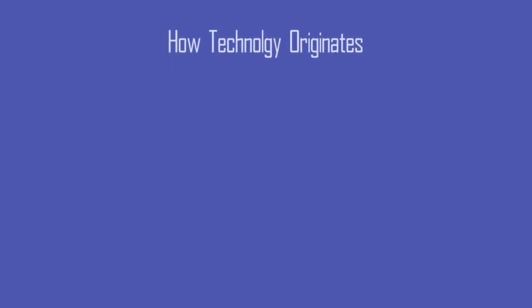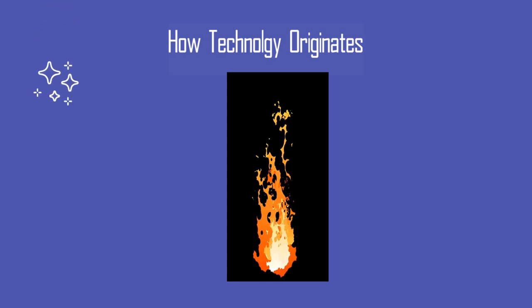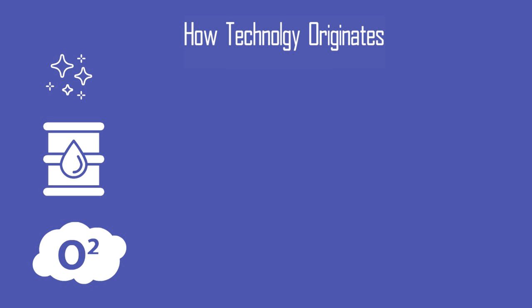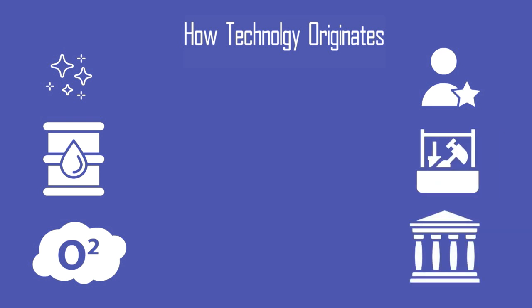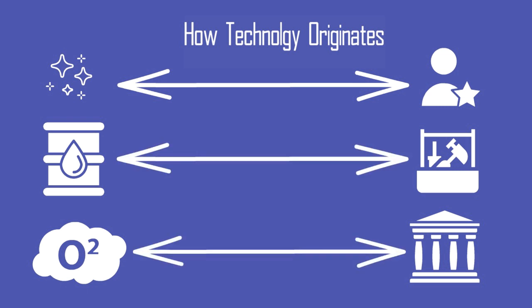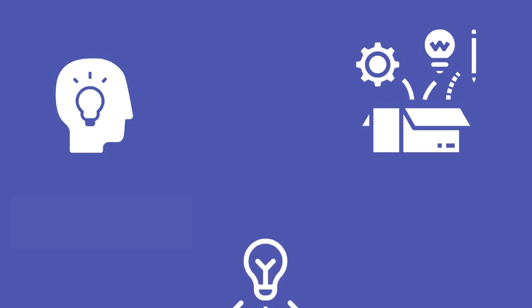Let's begin with the first segment: how technology originates. How technology emanates is a very interesting concept to explore. It's very analogous to creating a fire. Just like for making fire you need three elements — a spark to ignite, fuel, and oxygen in abundance — likewise for creating technology you need three elements: talent, resource, and culture. Talent is akin to a spark, and resource is the fuel. Talent is the intellectual potential — a mind that can think naturally and is full of ideas.